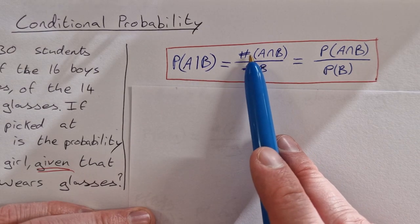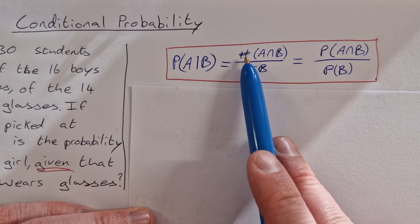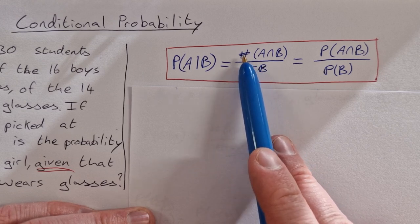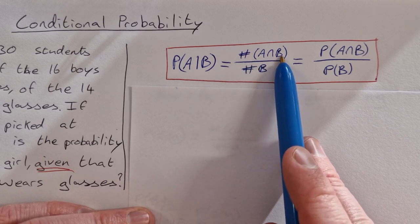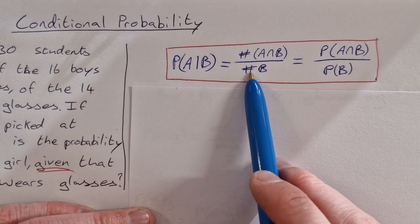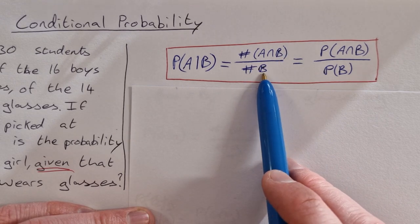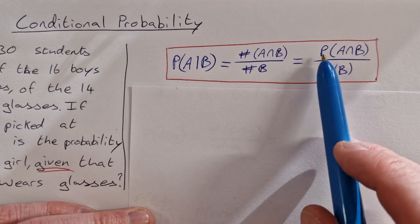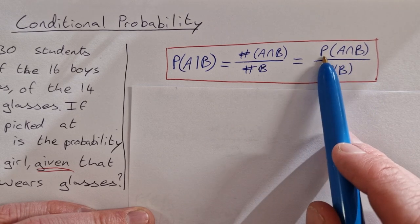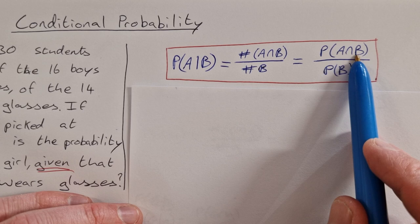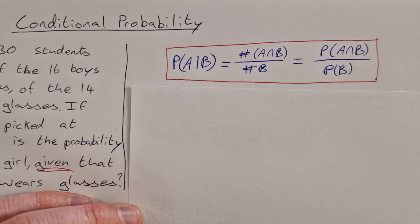There's two ways you can do it. You can use the cardinal number, so that's the number of elements in the intersection of A and B, the two sets, over the number of elements in B, the second set. Or you can use probabilities and use the probability of A intersection B over the probability of B.